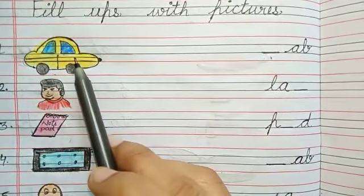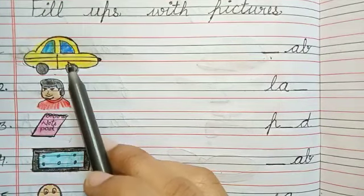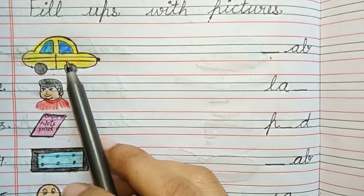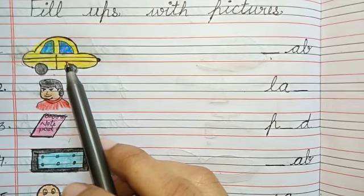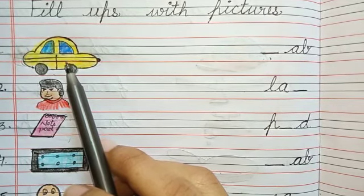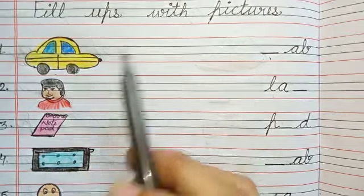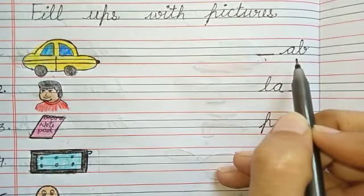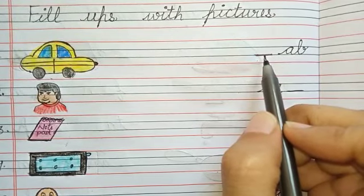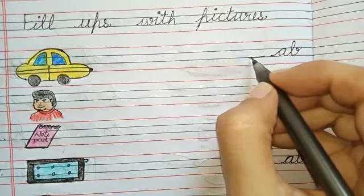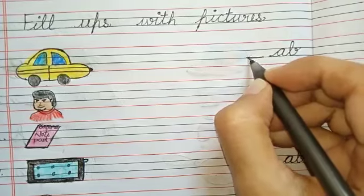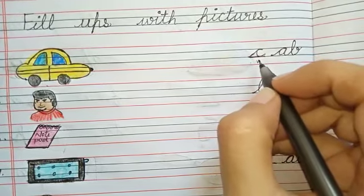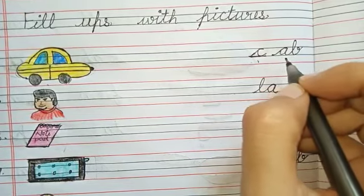Number one is, what is this? This is cab, right? Cab, ka. Ka kiska phonic sound hoata hai? C. Spelling of cab is C-A-B. Ka ab. C is missing. So, write down C-A-B. Start from third line. And make C. Ka ab. Cab.